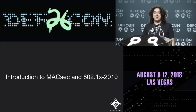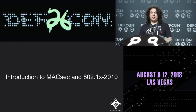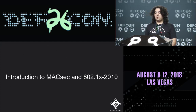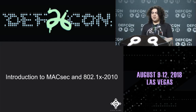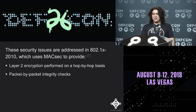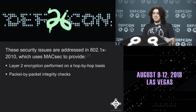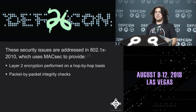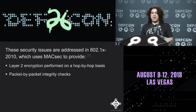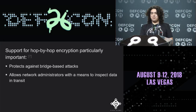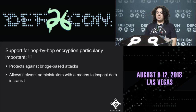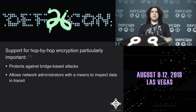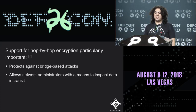All traditional 802.1X bypasses — hub-based or bridge-based — exploit the same fundamental security issues in 802.1X-2004: the protocol provides no encryption and no per-packet authentication. To mitigate this, 802.1X-2010 was introduced, using MACsec which provides layer 2 hop-by-hop encryption with per-packet integrity checks.